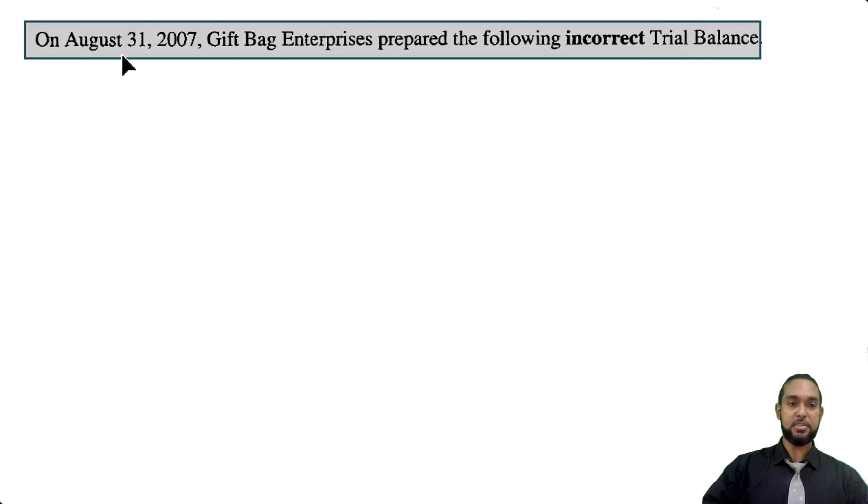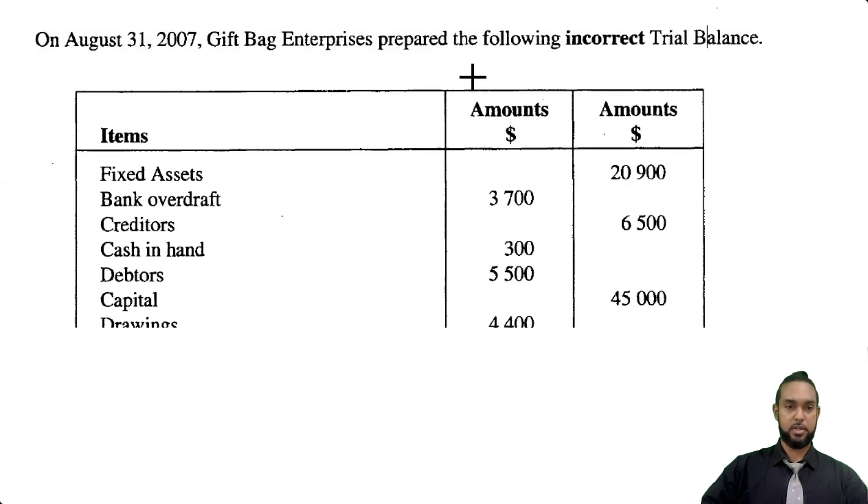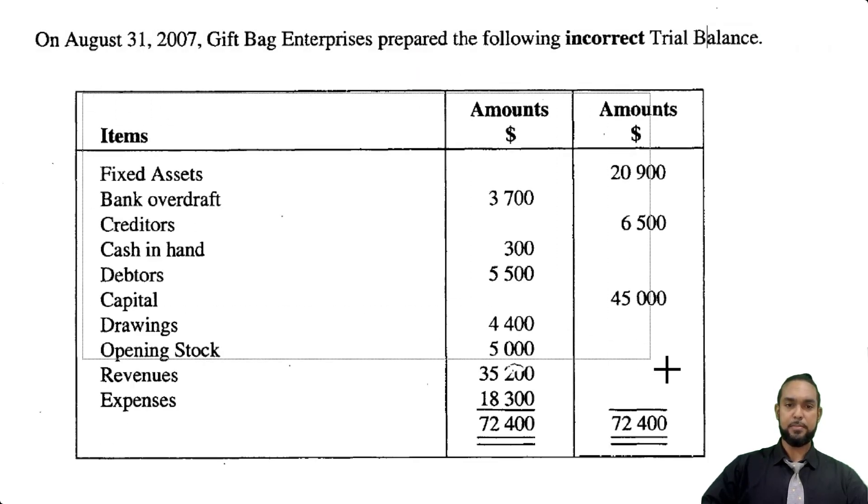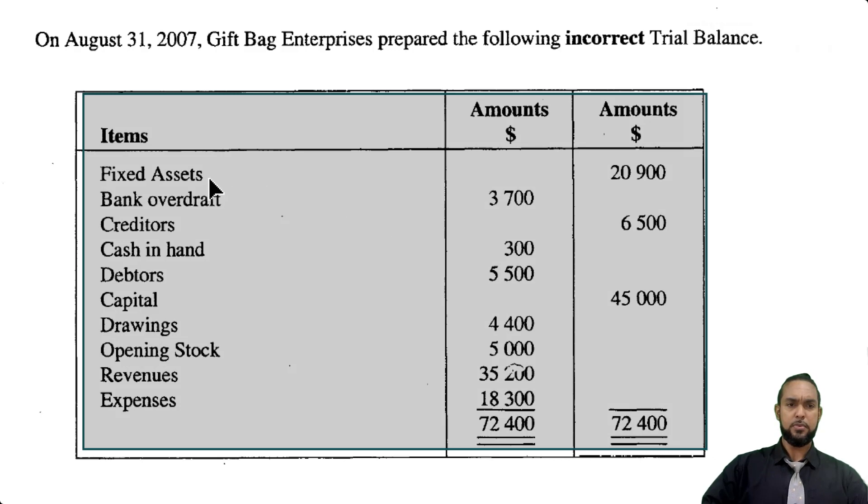Okay so it tells us that on August 31st 2007, Gift Bag Enterprises prepared the following incorrect trial balance. So they've given us a trial balance here, fixed assets in the credit column, overdraft in the debit, what's going on here?